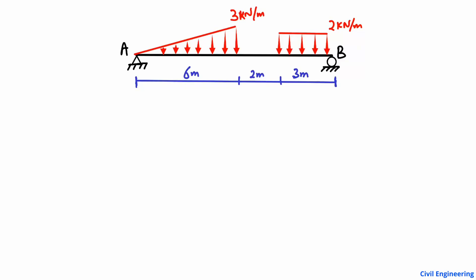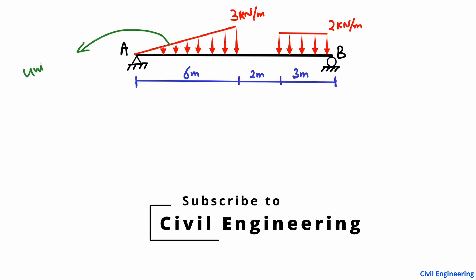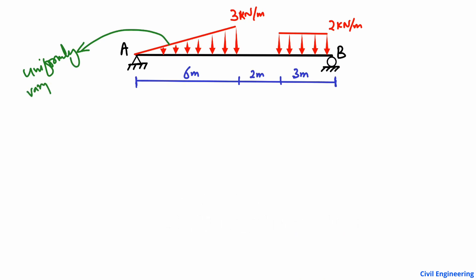Hello guys, welcome back to the Civil Engineering YouTube channel. Please subscribe our channel for civil engineering videos. In today's lecture we are going to find out the support reaction for a simply supported beam that has two different kinds of loading: a triangular load — also called a uniformly varying load — and a uniformly distributed load acting on the beam.